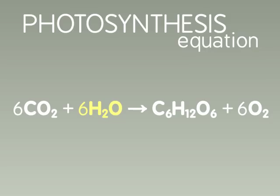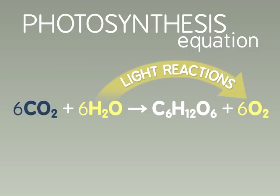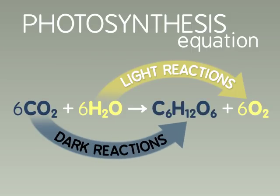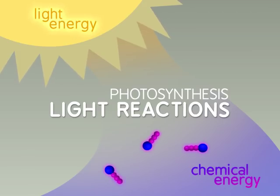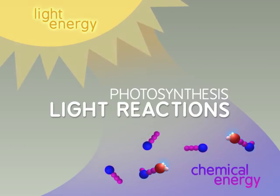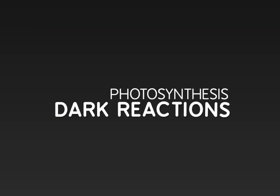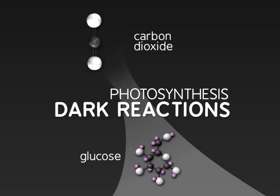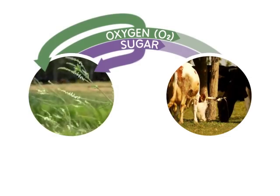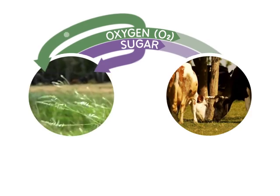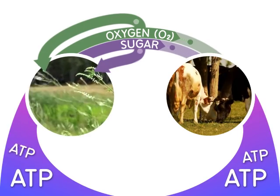The water molecules in this equation are consumed in the light reactions to yield oxygen, while the carbon dioxide molecules are used in the dark reactions to yield sugar. Importantly, during the light reactions, the light energy from the sun is converted into chemical energy in the form of ATP and NADPH. The dark reactions incorporate carbon into organic molecules such as sugars. The sugar and oxygen molecules that plants produce are available to the plant and animals alike for energy production.